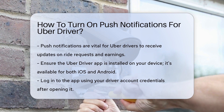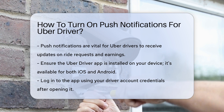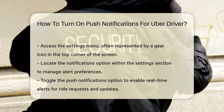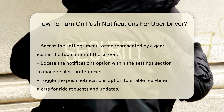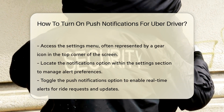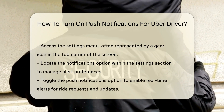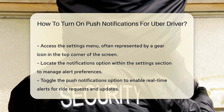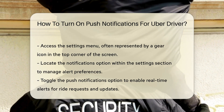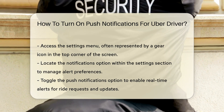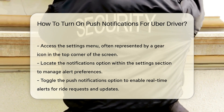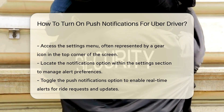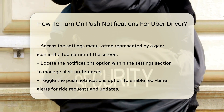Once logged in, navigate to the settings menu. This is typically represented by a gear icon located in the top corner of the screen. In the settings section, look for the notifications option. This area allows you to manage how you receive alerts.